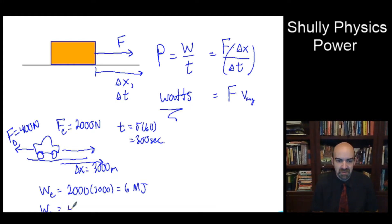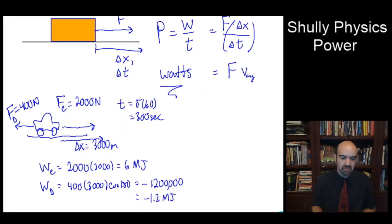How about the work done by drag? My drag is, we've got 400 newtons. And displacement is still 3,000 meters. Now what I did leave off here was a cosine of zero. The force of the engine and the displacement were in the same direction. So there's a cosine zero in there. That gave us a times 1. But here we've got a cosine of 180 because the displacement and the force are in opposite directions. So that gives us negative 1.2 megajoules of work done. So there's the work done by all our forces here.